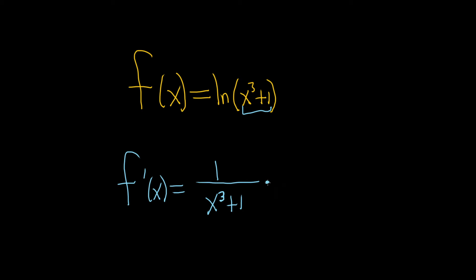And then times — the chain rule says that you multiply now by the derivative of the inside. The derivative of x cubed: you bring down the 3 and subtract 1, so that gives you 3x squared. And the derivative of 1 is 0, so you just get plus 0.